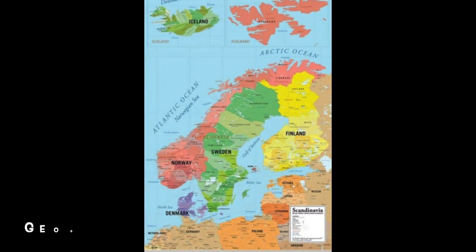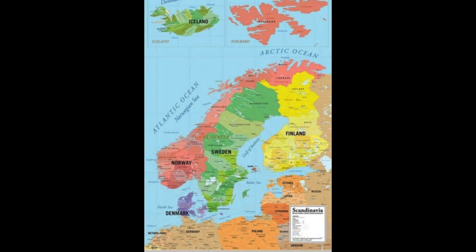This week we have northern European countries. We are going to name these countries that are near the Baltic Sea and the North Sea. Norway kind of looks like a giant key. So we have Norway, Sweden, Finland, and Denmark. And we're going to sing out these northern European countries: Norway, Sweden, Finland, Denmark — northern European countries!